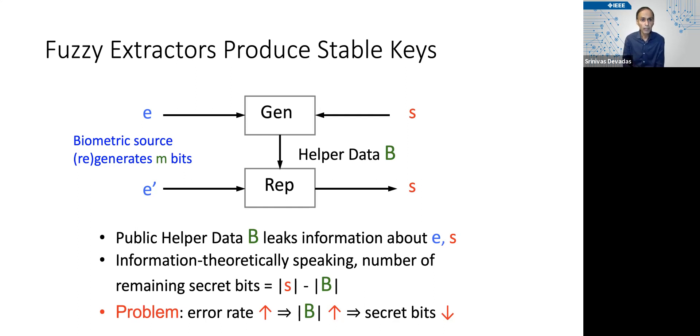The basic problem with the fuzzy extractor approach in this information theoretic setting is that as the error rate goes up, the amount of helper data goes up, and the number of secret bits that you have left goes down.